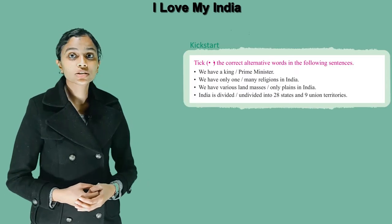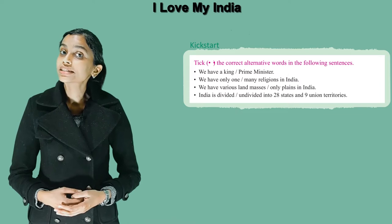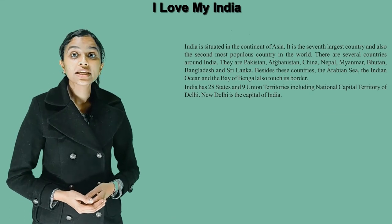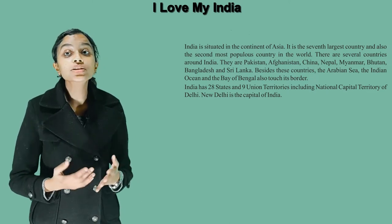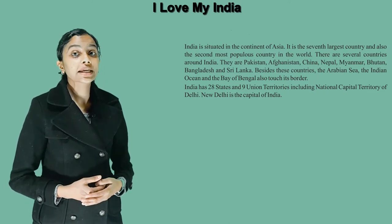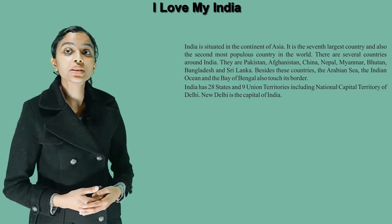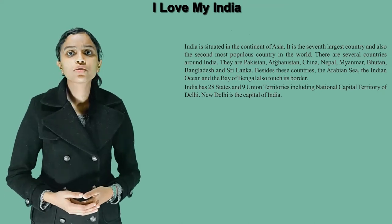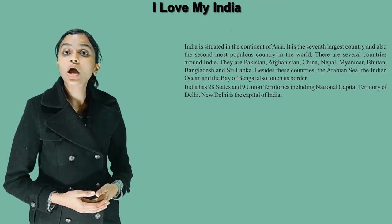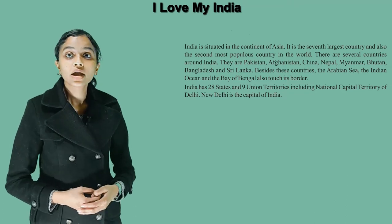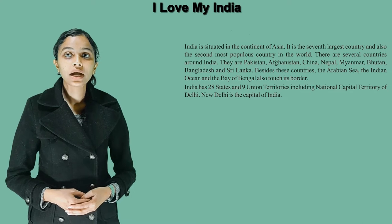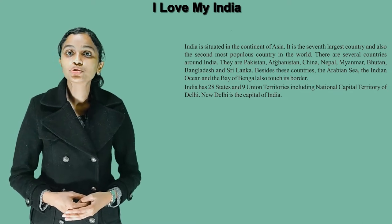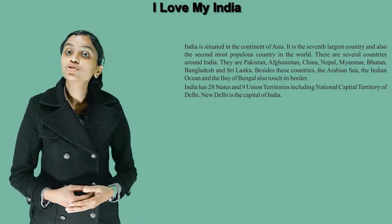Take the correct alternative words in the following sentences. India is situated in the continent of Asia. It is the 7th largest country and also the 2nd most populous country in the world. There are several countries around India. They are Pakistan, Afghanistan, China, Nepal, Myanmar, Bhutan, Bangladesh and Sri Lanka.